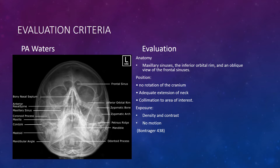In the final image, you should see the maxillary sinuses free from superimposition of the petrous ridges, the inferior orbital rim, and an oblique view of the frontal sinuses. There should be no rotation of the cranium as demonstrated by equal distance from the lateral orbital margin to the MSP and the lateral aspect of the skull. Collimation to the area of interest should be noted, and the density, brightness, and contrast should be sufficient to visualize the sinuses. Sharp bony margins should indicate no motion.